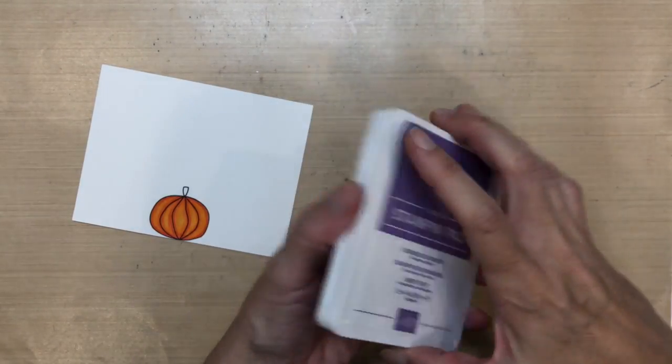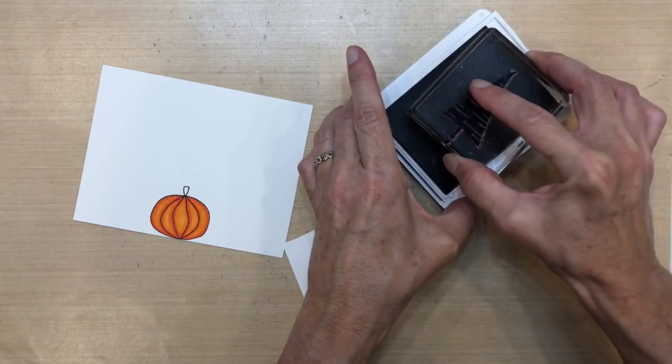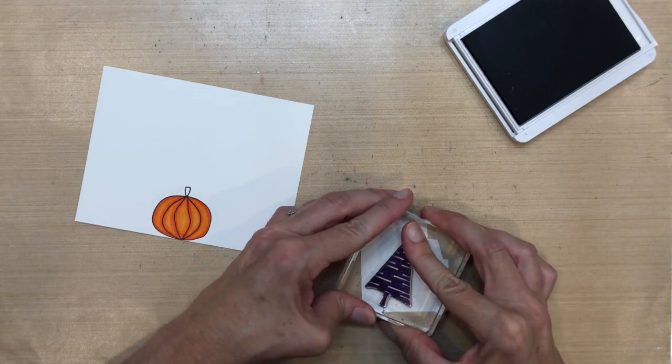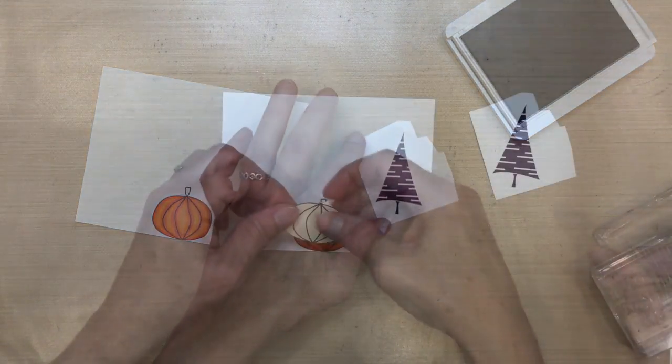My first color is Gorgeous Grape by Stampin' Up, one of the new colors. I thought it'd be fun to turn these Christmas trees into witch hats. So this one's going to be the one that goes on top of the pumpkin, so I'm going to stamp it separately.